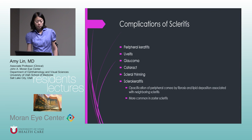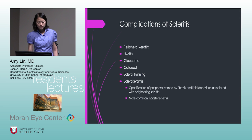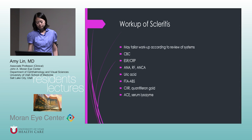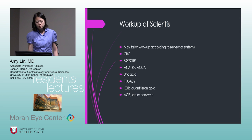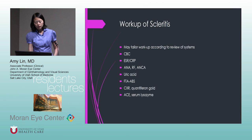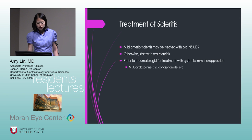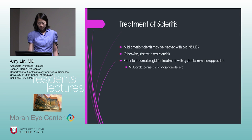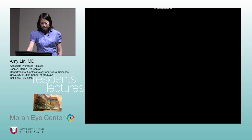Complications of scleritis — whether anterior or posterior — can be significant: peripheral keratitis, uveitis, glaucoma, cataract, scleral thinning, and sclerokeratitis where there's opacification of the peripheral cornea adjacent to a neighboring area of scleritis. Sclerokeratitis is more common in zoster. The workup should be tailored to the review of systems and can include CBC, ESR, CRP, ANA, rheumatoid factor, ANCA, uric acid, syphilis testing, TB testing, and sarcoid evaluation. For treatment, some mild anterior scleritis can be managed with oral NSAIDs, but usually oral steroids are needed with referral to a rheumatologist for systemic immunosuppression.